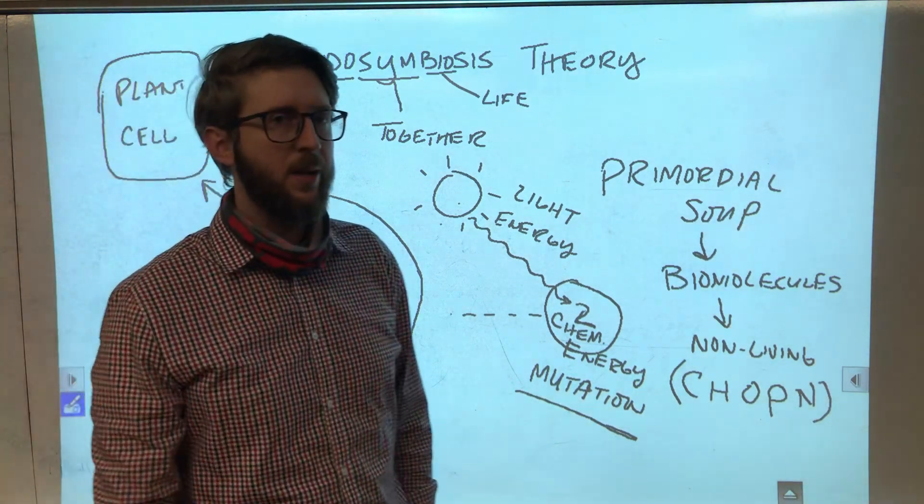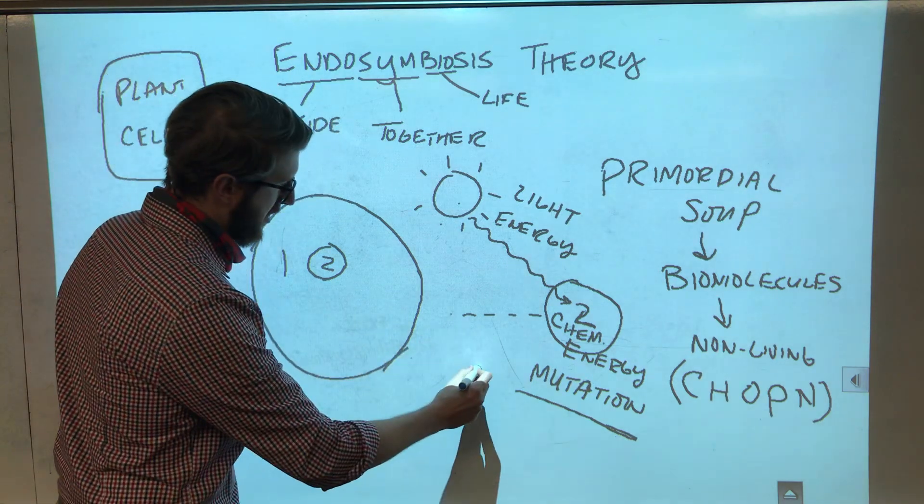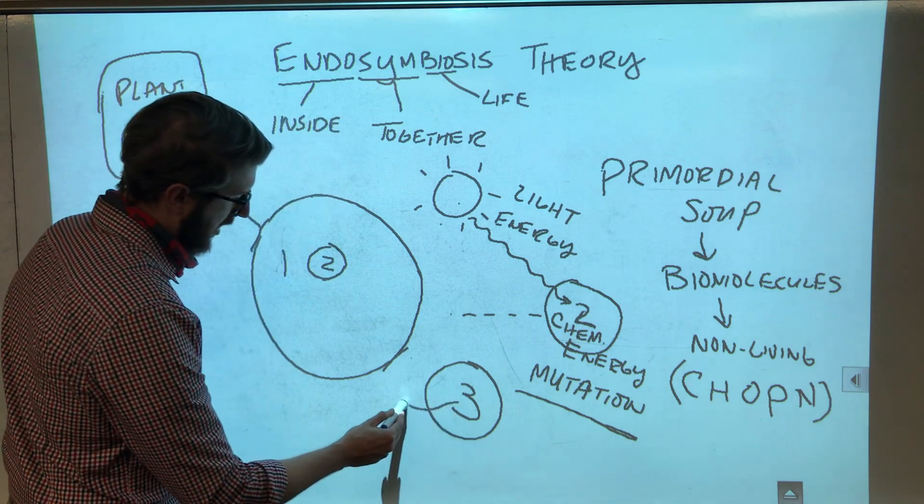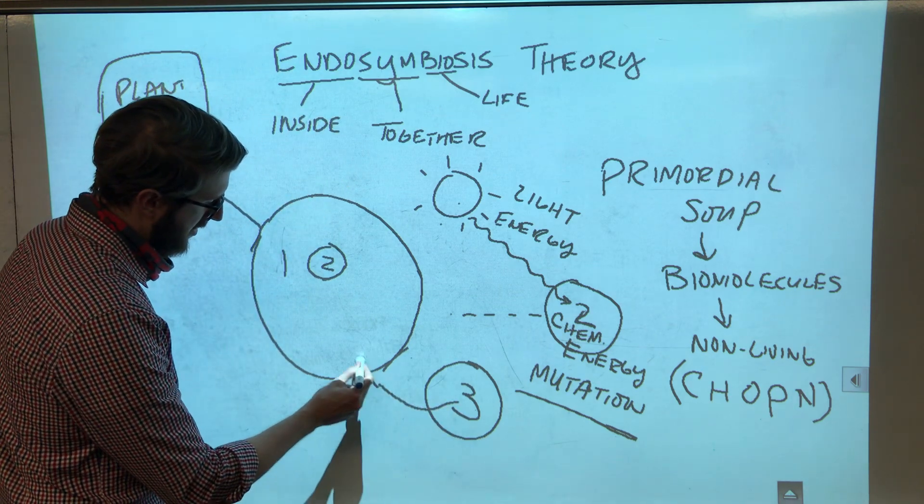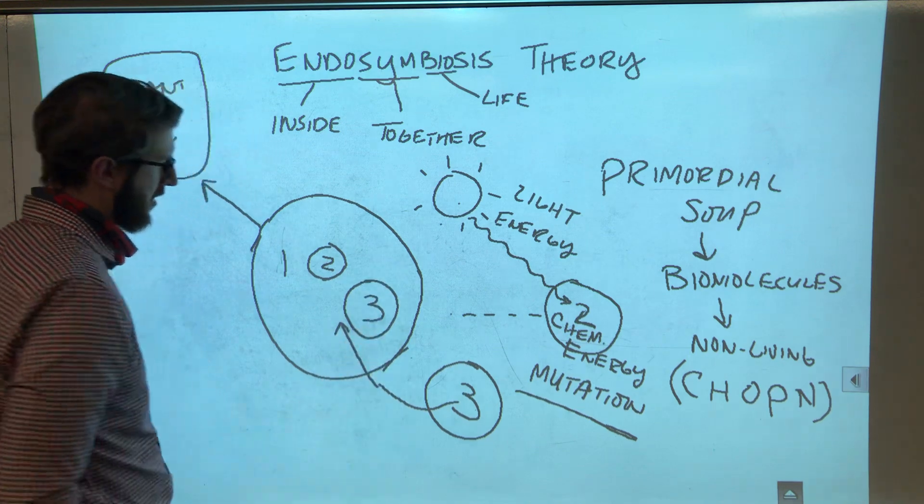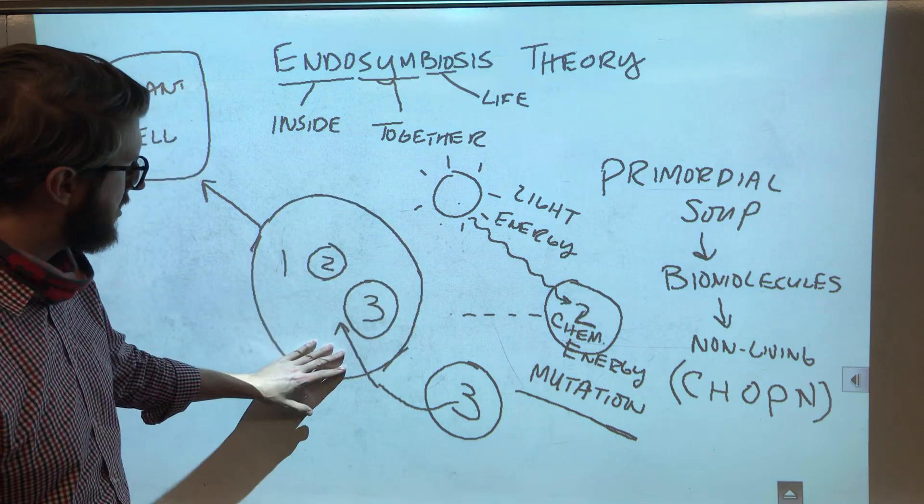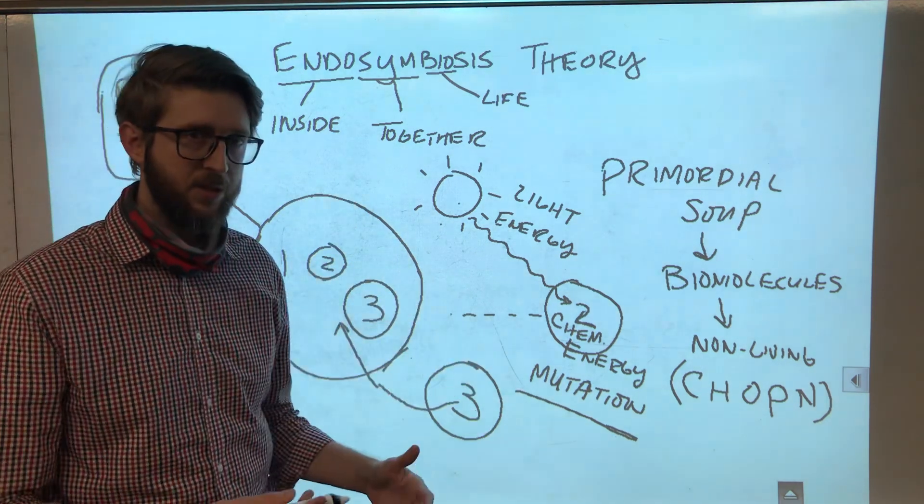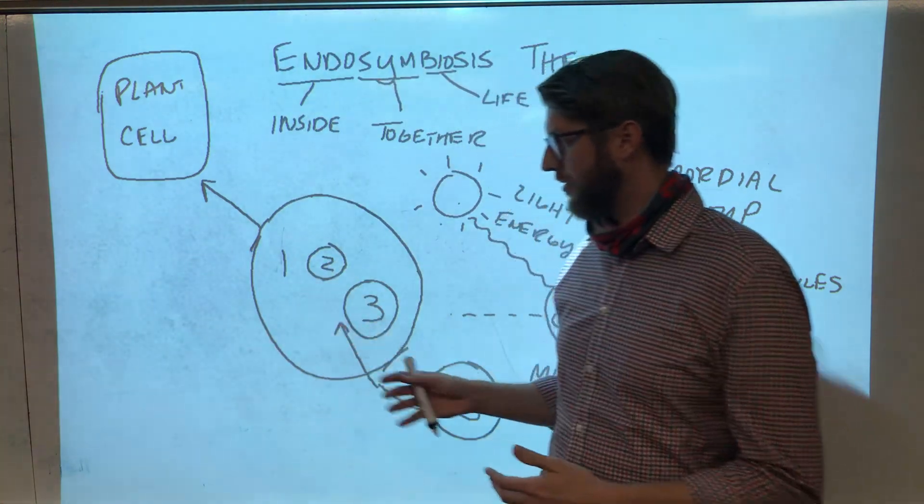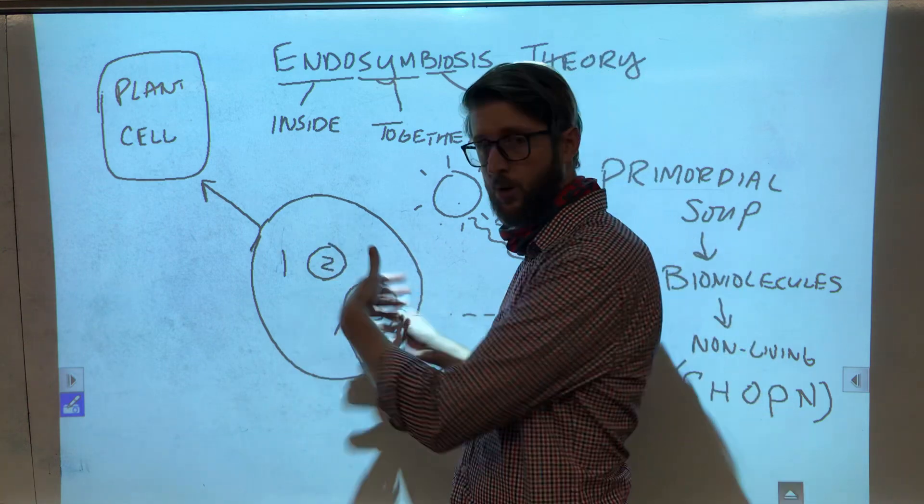So this cell would eventually evolve into a plant cell. And there's another type of small cell that could have been involved as well. And the same thing gets ingested by a big cell one. So now you can see how over time these big cells could ingest more and more small cells.